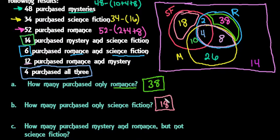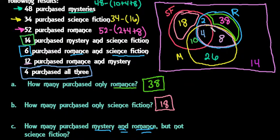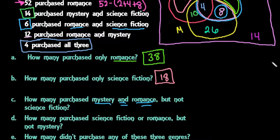When questions get more complicated you have to think a bit more. How many purchased mystery and romance but not science fiction? Looking at the overlap of mystery and romance, the total is 12, but only 8 purchased just mystery and romance without science fiction. So the answer is 8.